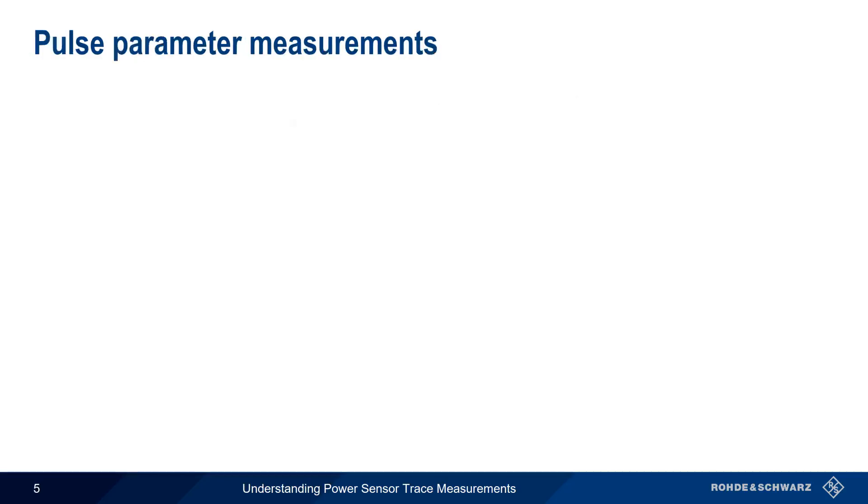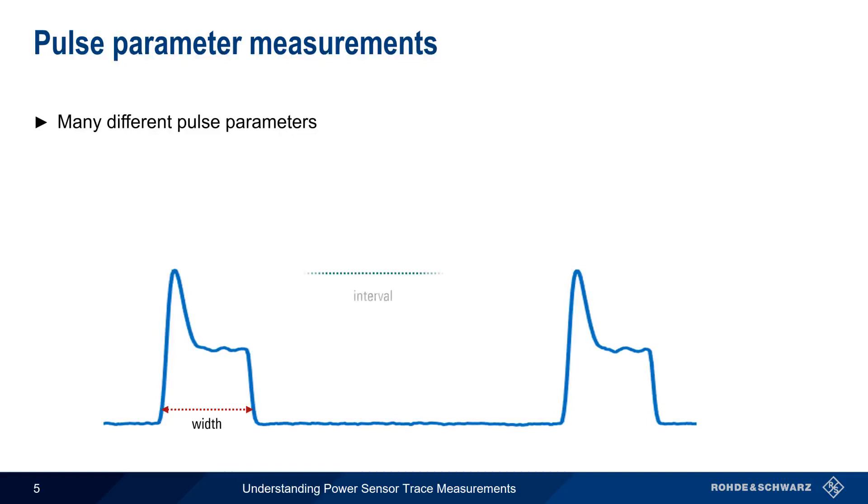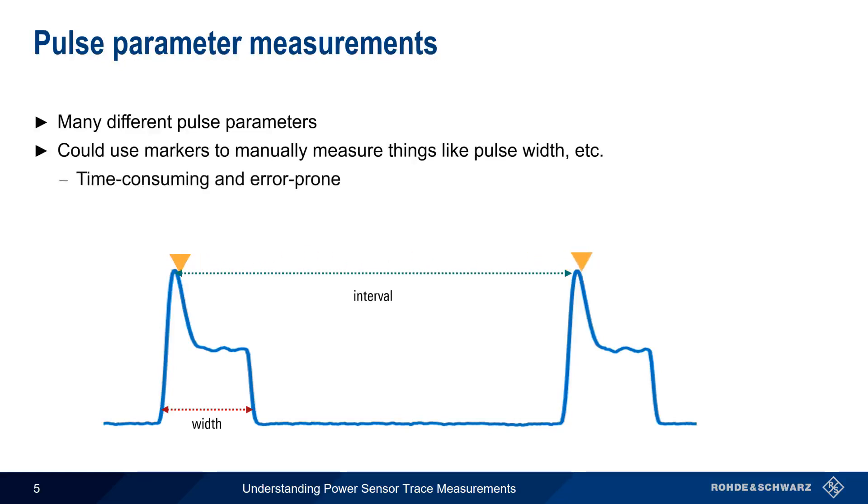There are many different pulse parameters that can be analyzed and measured using a wideband power sensor. The most basic measurements of pulse signals include things like the width of the pulses and the spacing between the pulses. One way we could do this is to use markers and manually measure pulse width and the pulse repetition interval, but this is a time-consuming and error-prone process. This is why most wideband power sensors have an automatic pulse analysis function that can quickly and accurately determine the most important parameters of pulse signals.